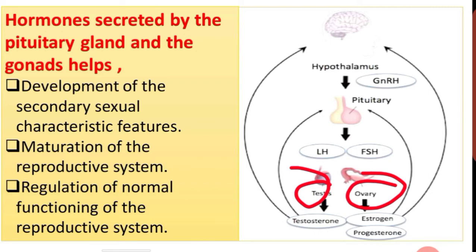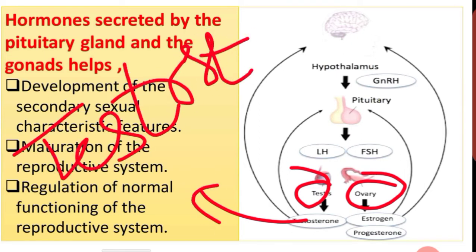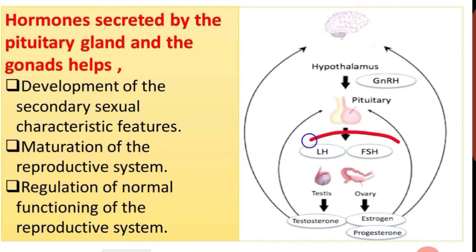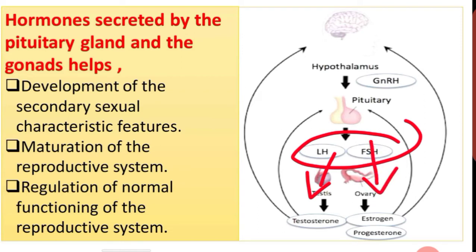LH stimulates the testis to produce testosterone. Testosterone is a male sex hormone. The LH and FSH act on the ovary to produce estrogen and progesterone — not only as sex hormones but they also induce sexual development too.